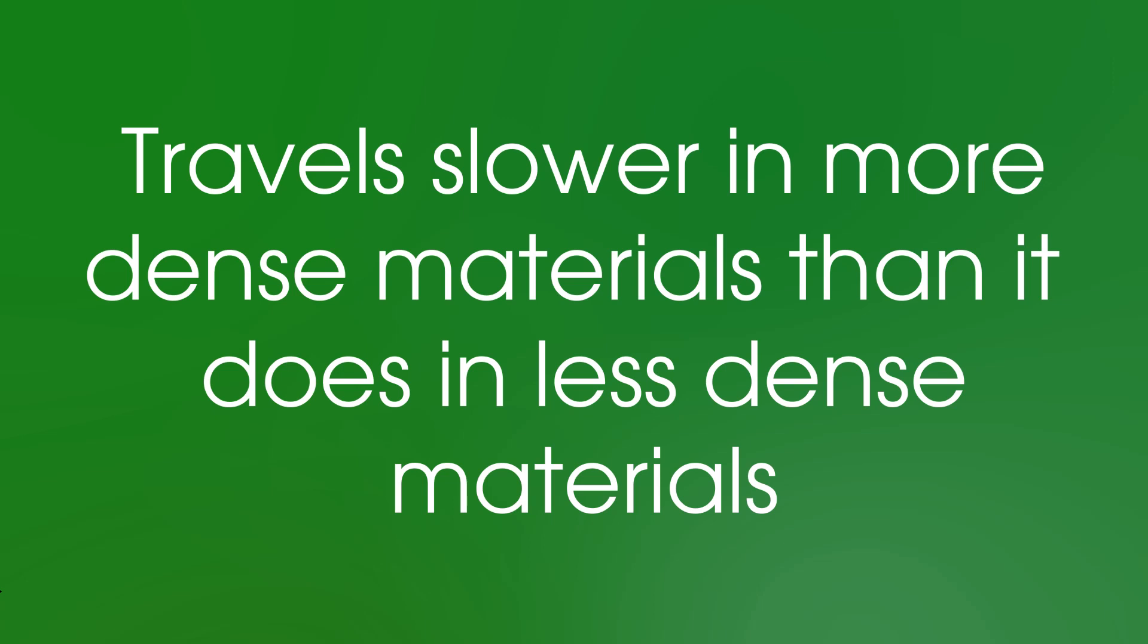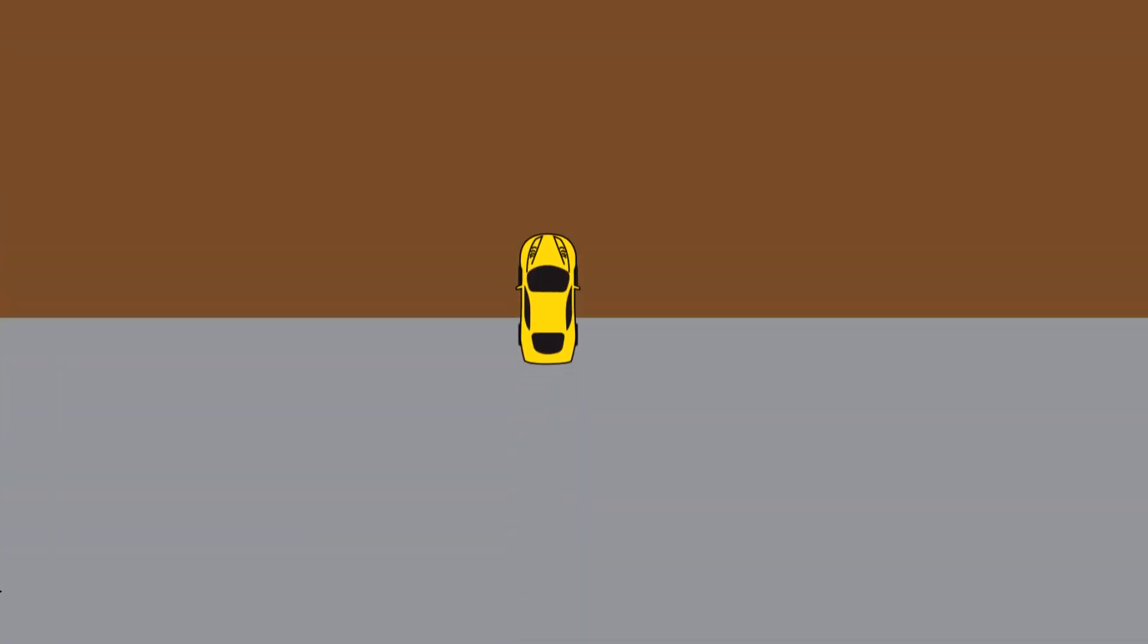We can think of this like a car entering a muddy section of road, so we know the car will travel slower through the mud, and as we can see here, if the car drives in at an angle, part of the car is going to slow down first, causing it to turn.